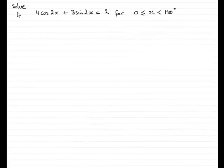Now in this last part of the question we're asked to solve the equation 4cos2x plus 3sin2x equals 2 and give our solutions for x between 0 and 180 degrees, although we can actually equal 0 degrees.